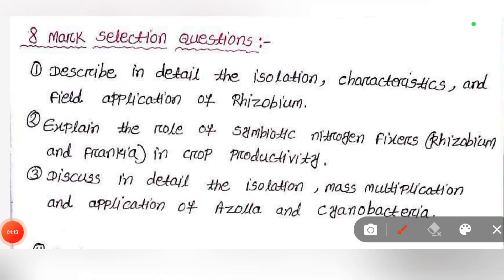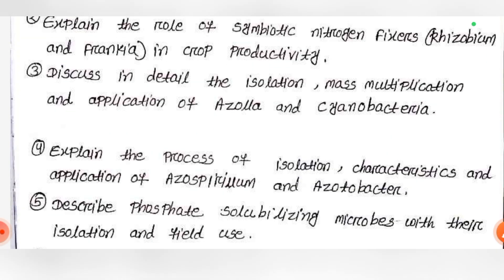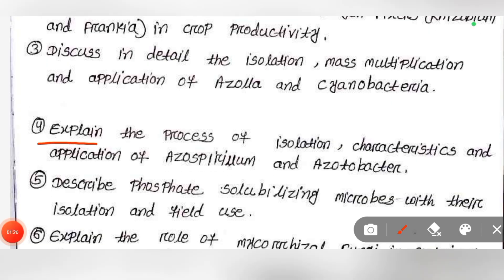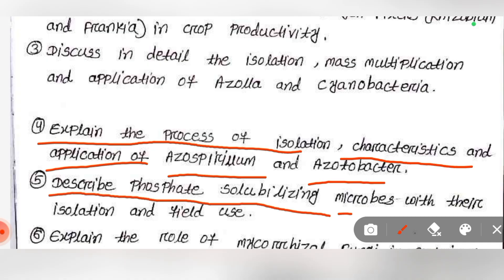Then, discuss in detail the isolation, mass multiplication and application of Azolla and cyanobacteria. Then, explain the process of isolation, characteristics and application of Azospirillum and Azotobacter. Then, describe phosphate solubilizing microbes with their isolation and field use.